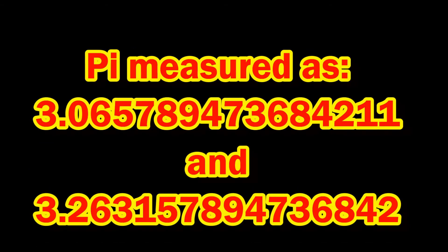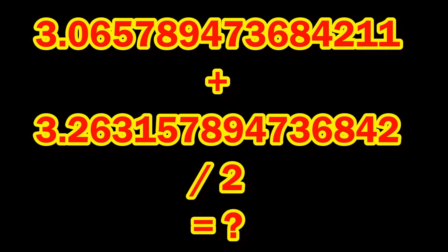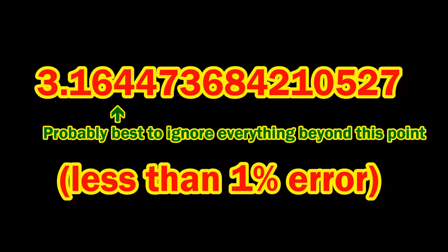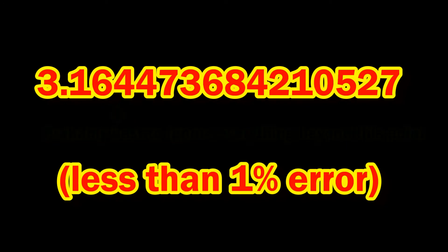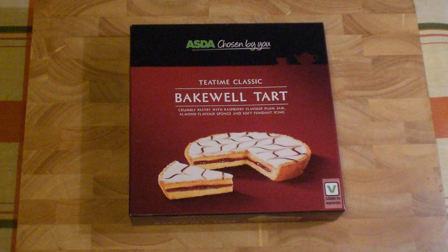Now, obviously, there's some slop and measurement difficulty here. So let's average out our two measurements of pi. We get 3.1644736, etc. Not the right number, but considering that we're working with a crumbly, squashy disk of pastry, not a bad approximation. Thanks for watching, and I hope to see you again soon.